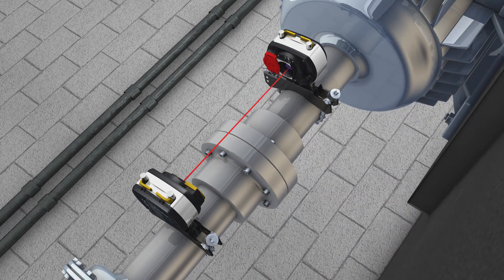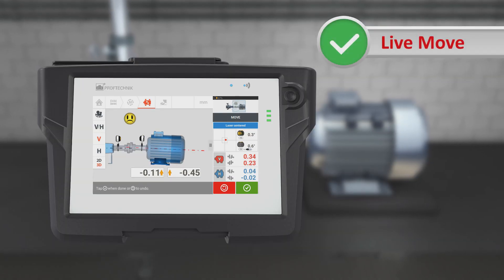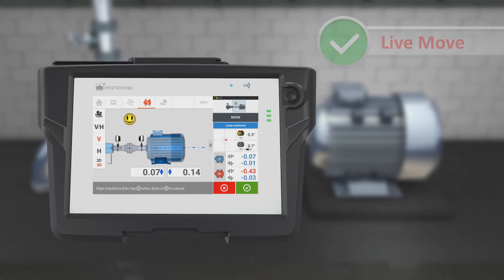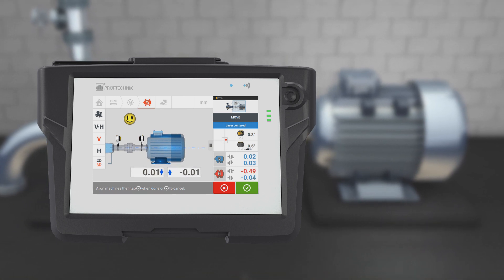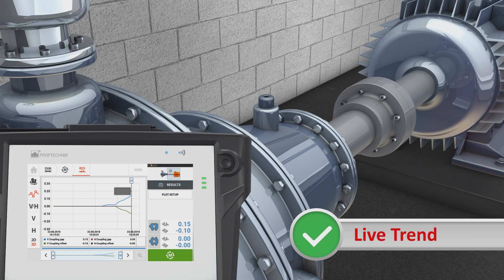Additionally, the live move feature, which enables aligning the shaft with the laser sensor heads mounted to directly control the alignment process, can be started and terminated in any position. Another special feature that only Pruftechnik is able to provide: live trend.